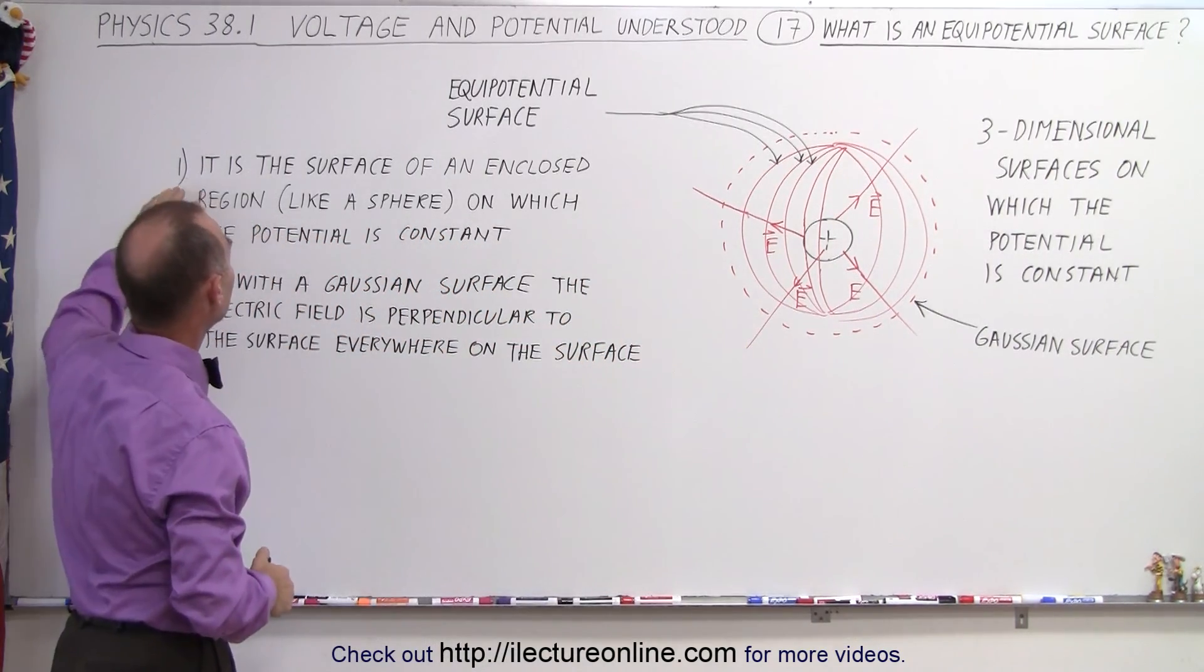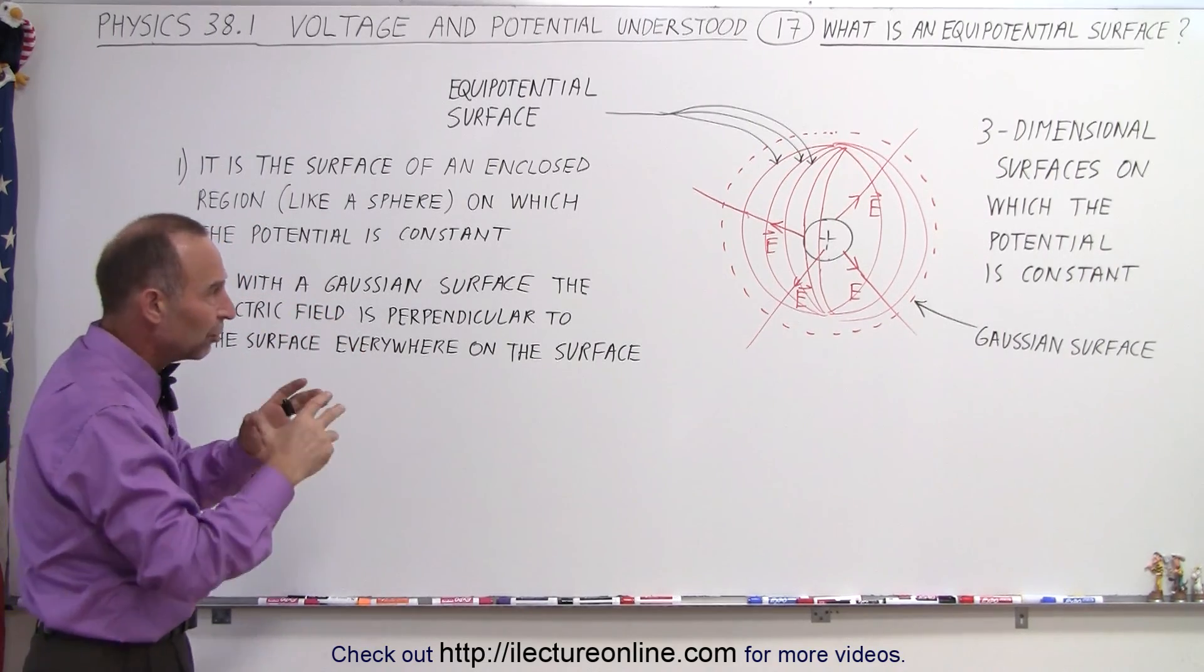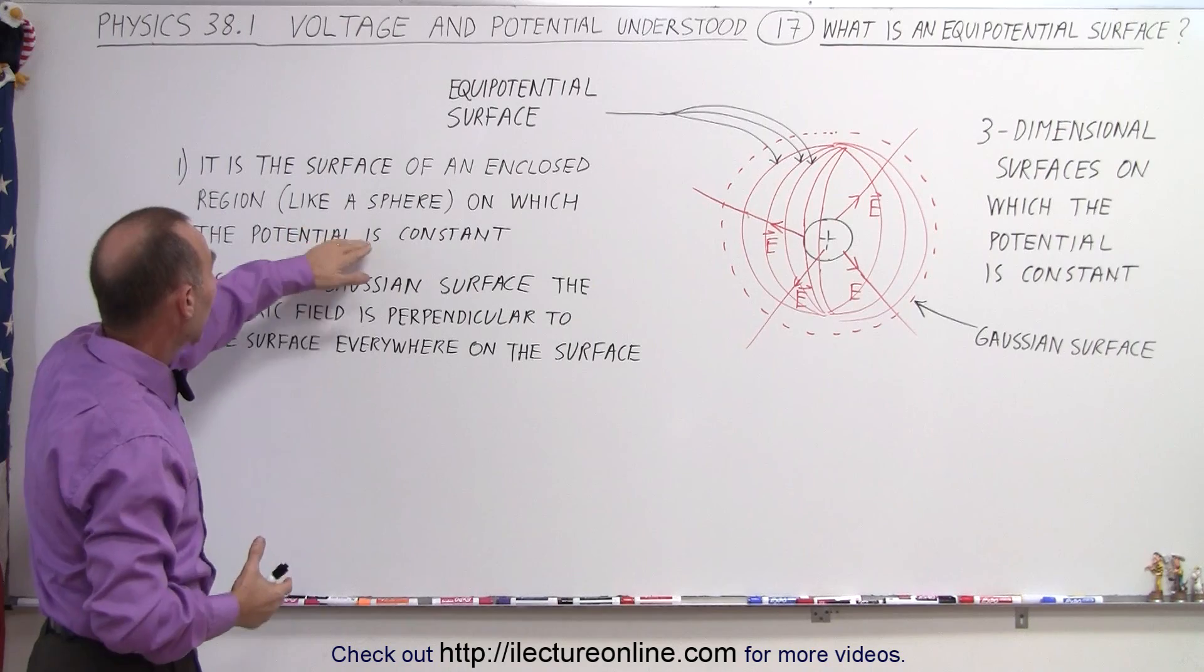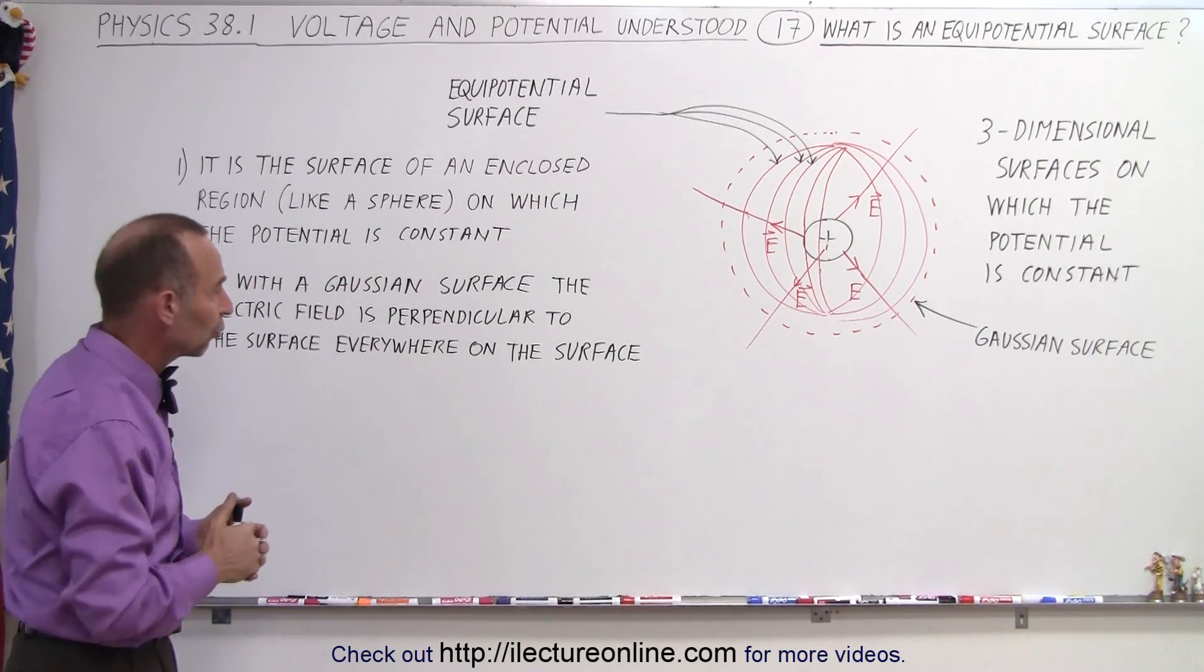So it is the surface of an enclosed region and a sphere of course is a handy shape but it doesn't have to be a sphere on which the potential is constant that can be considered an equipotential surface.